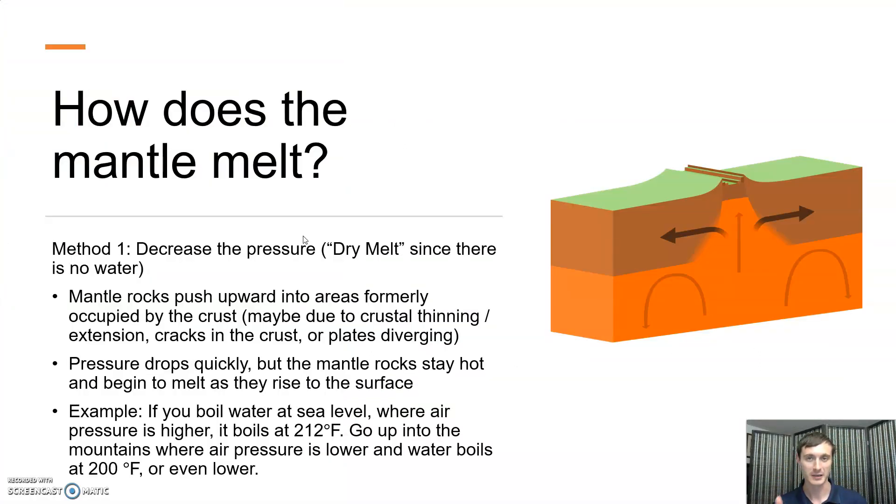This process I'm talking about here is method number one, this is the dry melt. This is the way that you get liquid, hot rock at mid-ocean ridges and other divergent margins. The mantle rock rises. As it rises, pressure goes down, but temperature stays the same, and so it begins to melt.